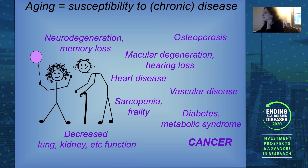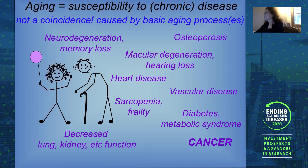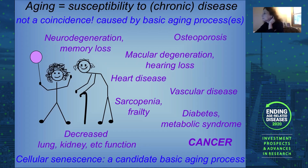What is striking about all these diseases is that they all pretty much follow the same trajectory — very rare in young people, and somewhere around the midpoint of our lifespan, they all begin to rise with approximately exponential kinetics. Those of us who work on aging think this is not a coincidence. We think there are some basic processes that drive aging, and it is those basic processes that set us up to be susceptible to all of these very different diseases. Today I'll tell you about one candidate basic process called cellular senescence.